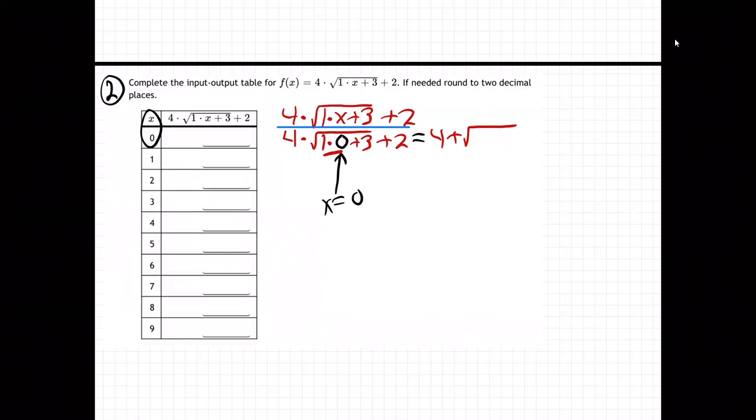Well, that's supposed to be times, not plus. So 4 times the square root of 3. So I just worked out that whole inside: 1 times 0 plus 3 is just 3, plus 2 at the back. And then you hit the buttons on your calculator. Take 4 times the square root of 3, and then add 2. And whatever number you get, they want you to round it to 2 decimal places.